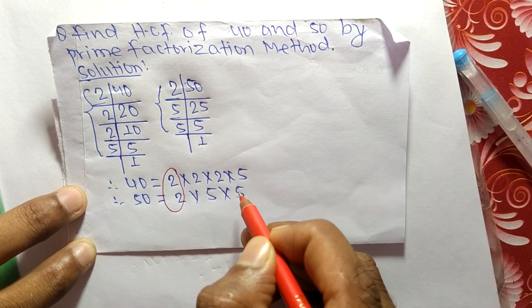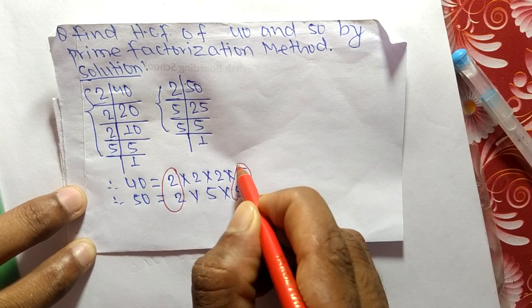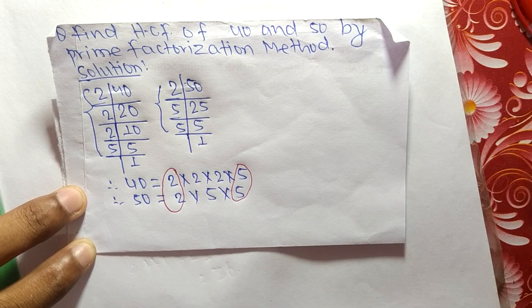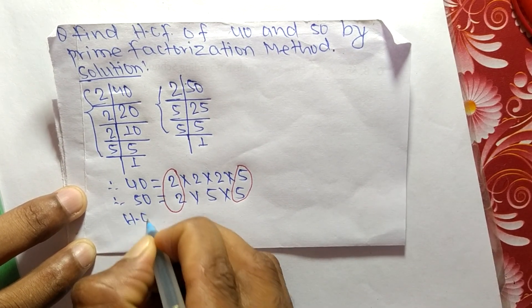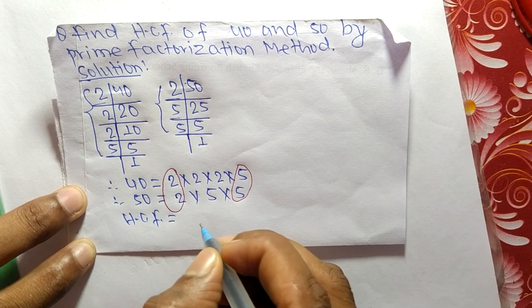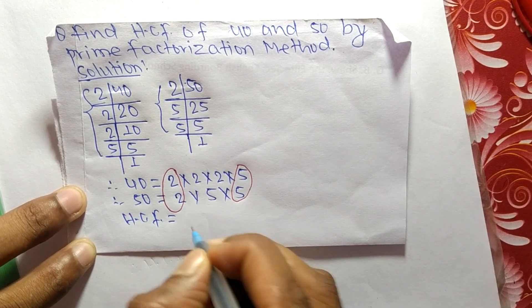HCF is the product of common factors, and the common factors here are 2 and 5.